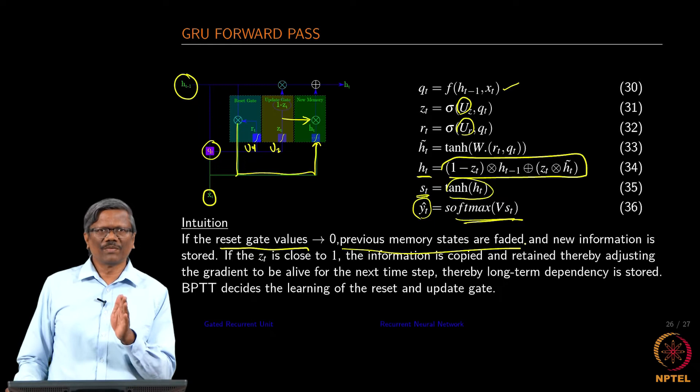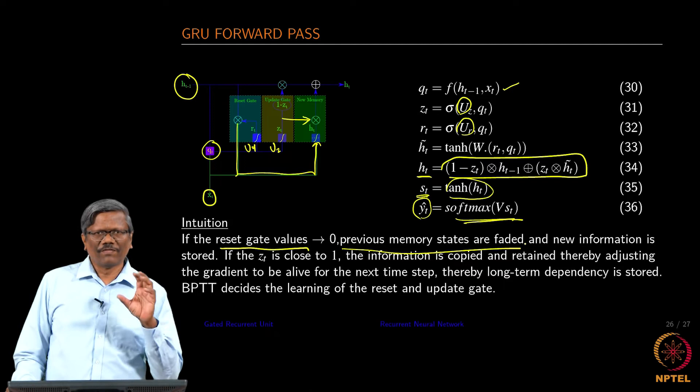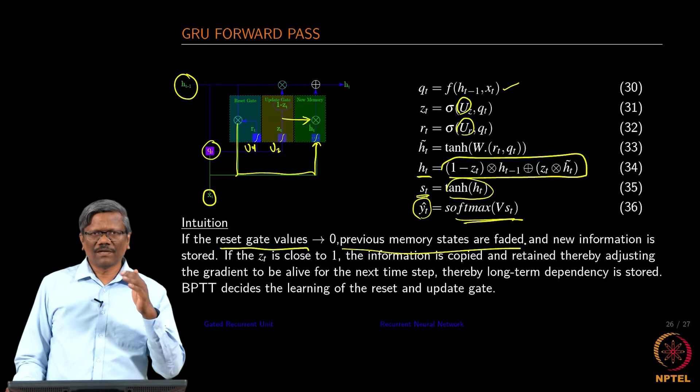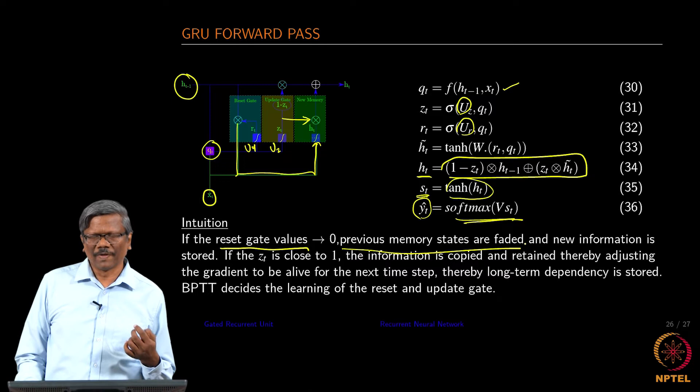The values are not going to be 0 for every element. In this case there could be some values because we are taking the sigmoidal value. It is going to be between 0 and 1 and there could be some intermediate values.